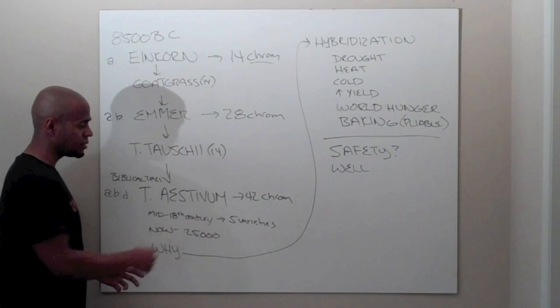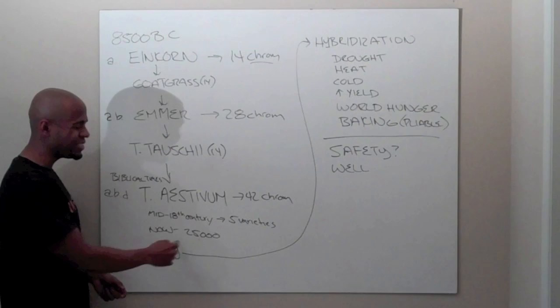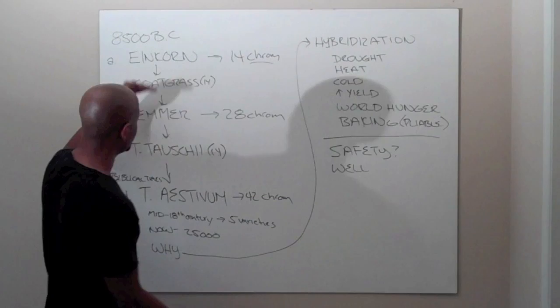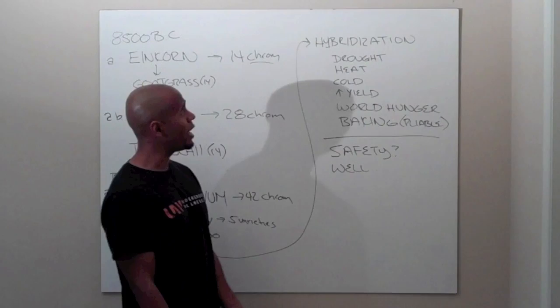But then, in the mid-18th century, there was a count done, and there were five varieties of this Triticum estevum. That's cool, there was just five. But now what do we have? We've got 25,000 varieties. How did that happen? Of course, that didn't happen just by nature. We had some man-made intervention going on, we had some science going on up in that deal for sure.